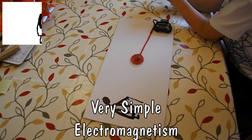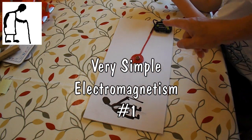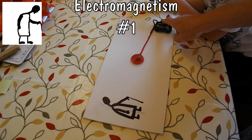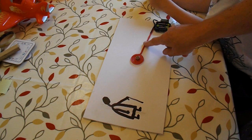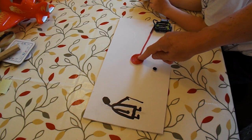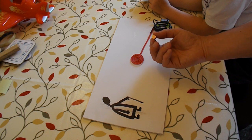All right, first of all I'll tell you what we've done. We've got some batteries, we've got a switch, we've got some wire that's turned round in a coil, and then we've got a magnet.